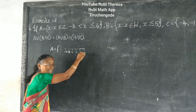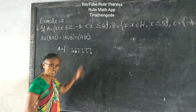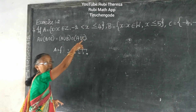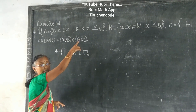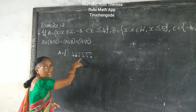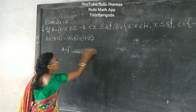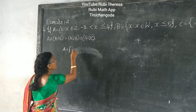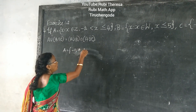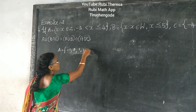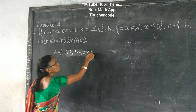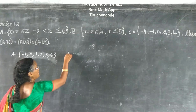You should write 4. Why? Because it is less than or equal to — so 4 is included. So the elements are: minus 1, 0, 1, 2, 3, 4.